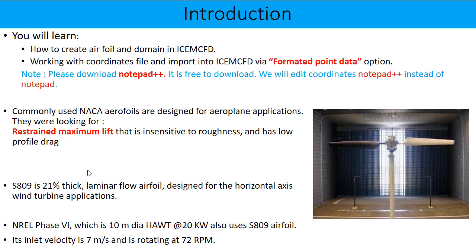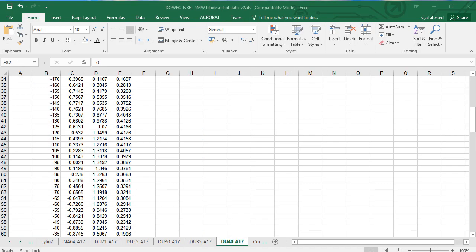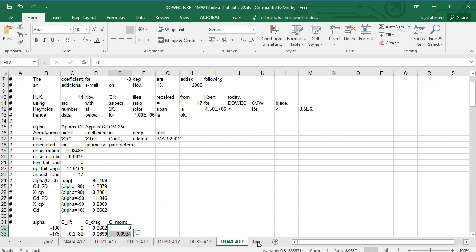Therefore they designed the S800 series. There are a total of 35 aerofoils in this series, and some of them are thin and some are thick. This particular aerofoil, S809, is 21% thick. It is a laminar flow aerofoil designed for horizontal axis wind turbines. There are also some aerofoils designed for vertical axis wind turbines, which you can see here.